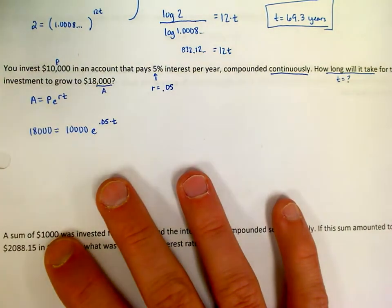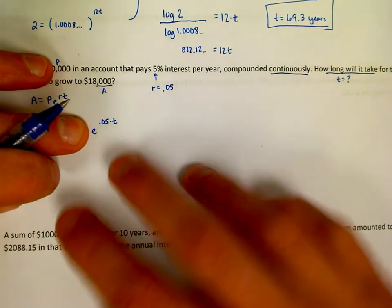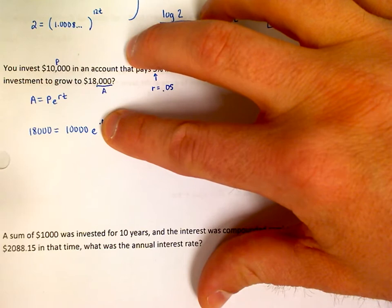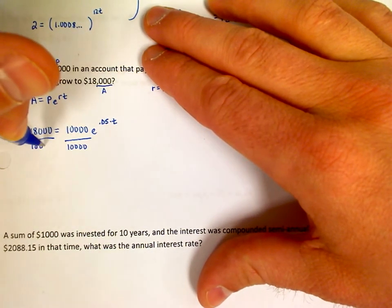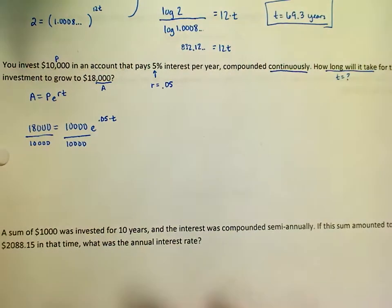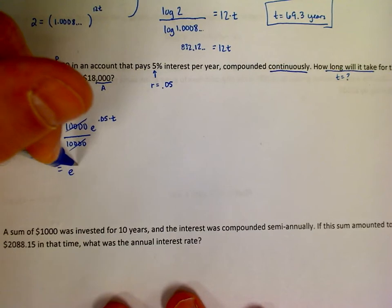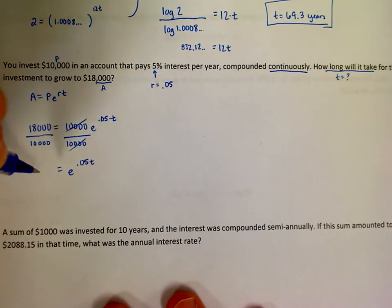My first step in every single problem is to get the thing with the exponent, that's the e to the power, by itself, which means I need to get rid of the principal. Right now I'm multiplying by 10,000, so what I need to do is divide. So once again, just like I said in the very first video of the series, my first step is always to divide by the principal. Those go away on the right-hand side. I just have e to the 0.05t. On the left-hand side, 18,000 divided by 10,000, which is simply 1.8.